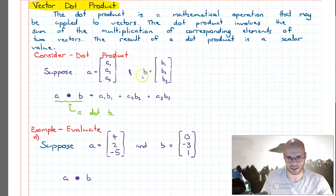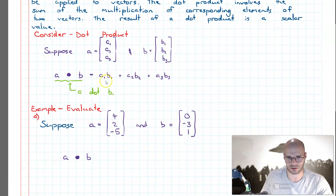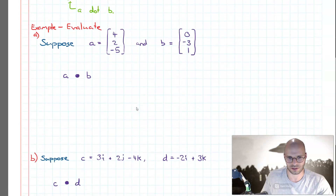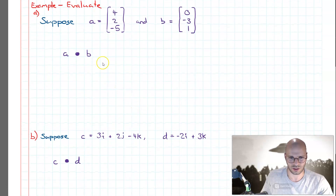Now consider we have vectors a and b. What we're going to do is multiply the corresponding elements: a1·b1, a2·b2, a3·b3, and we sum them all together. This gives us the dot product of vectors a and b, which we state as a dot b.